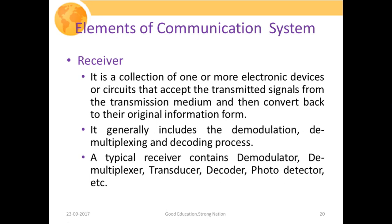The receiver's main responsibility is to re-modify the signal that was modified by the transmitter so it can be understood by the destination user. A receiver is a collection of one or more electronic devices or circuits that accepts the transmitted signal from the transmission medium and converts it back to the original information form. It generally includes demodulation, demultiplexing, and decoding — the inverse of what the transmitter performs. If the transmitter performs modulation, the receiver performs demodulation; if the transmitter applies multiplexing, the receiver applies demultiplexing; and if the transmitter encodes, the receiver decodes.